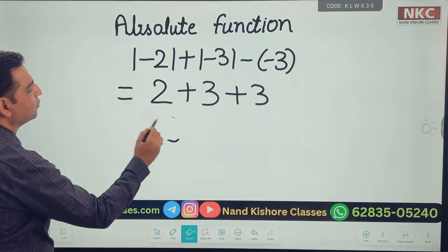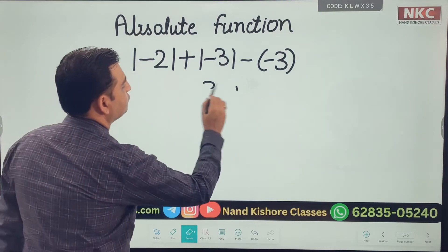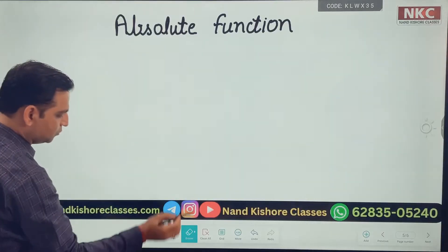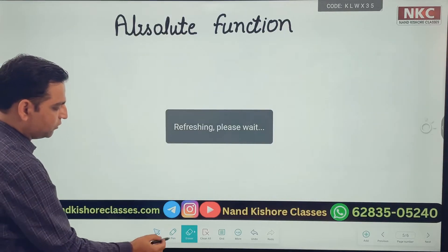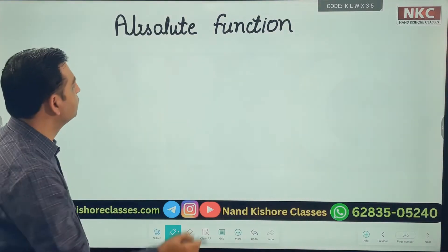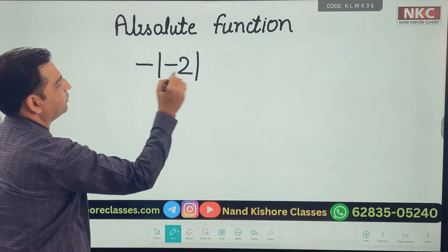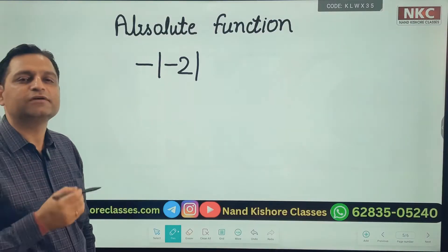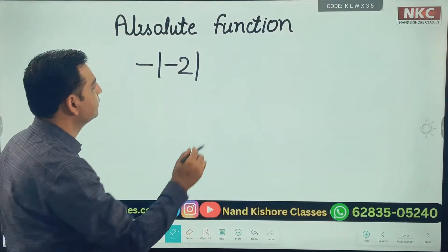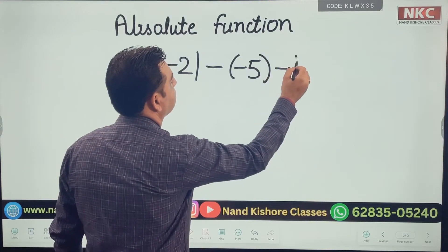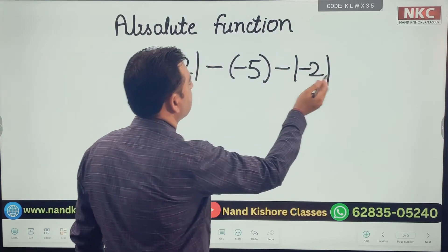Let us do one more question of the same type so that the whole concept is clear. I am writing one more question on the board. You can also try at your own end. For example, this is the question: −|−2| − (−5) − |−2|. Somewhere these negatives create confusion. Check this question. You can try and I am doing it on the board. You can compare your answer.